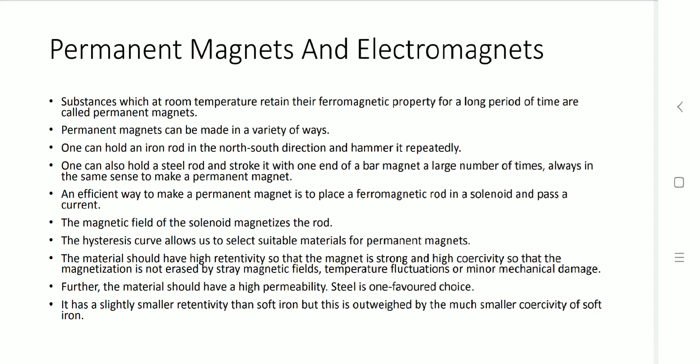Now let us focus on the next topic: permanent magnets and electromagnets. Permanent magnets are designed using ferromagnetic materials. If the ferromagnetic property remains constant for a longer time period at room temperature, that substance can be a permanent magnet. One early method was using an iron rod: placing it in the south-north direction and hammering it repeatedly so it becomes a permanent magnet.